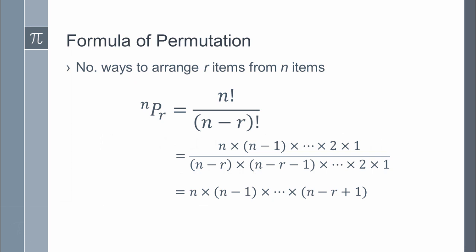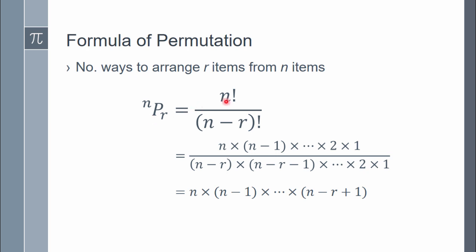Let us revise the formula for permutation. Permutation is the number of ways to arrange a portion of items from a larger group of items. In mathematical terms, it is the number of ways we can arrange r items from n items. The formula is nPr, written like this in math, and the definition is n factorial divided by n minus r factorial. You can expand the numerator and denominator like this.